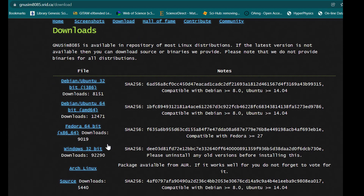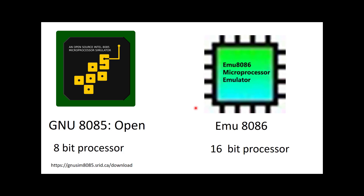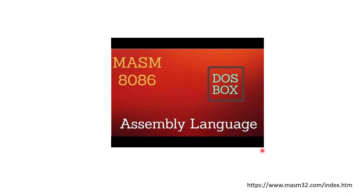The second simulator, which I'm going to use in this course, is emu8086, which is a 16-bit processor — you can use 16-bit word length, meaning 16-bit data. The last one is masm8086, which is also a microprocessor simulator, but you have to use a DOS command prompt to run the instructions and execute your code — it's based on DOSBox basically.